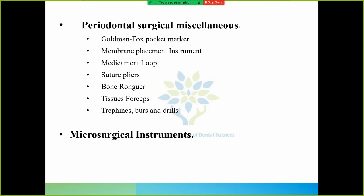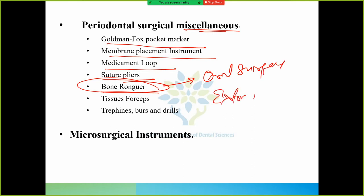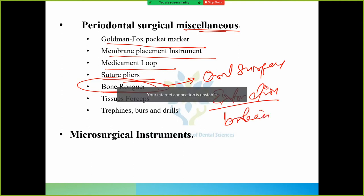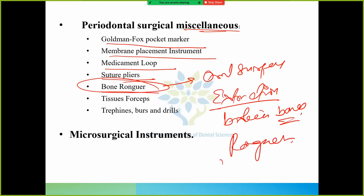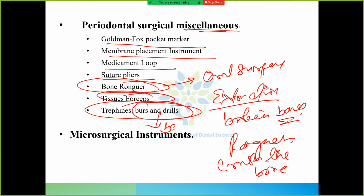Periodontal surgical miscellaneous instruments: Goldman-Fox pocket marker, membrane placement instrument, medicament loop, suture pliers, bone ronger. Bone ronger is important. Like in oral surgery, we did some surgery, maybe a tooth extraction. After the extraction some broken bones are there, so what we will do? We will take a ronger and crush the bone. Then we have tissue forceps, trephines, burs and drills. Burs and drills we use sometimes to cut the bone - we need to drill the bone sometimes, so we use burs and drills. Microsurgical instruments are also required, because if we use microscope, we will need microsurgical instruments.